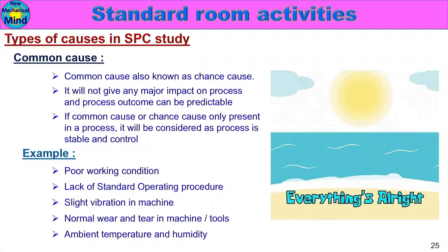If common cause is present, the process is stable and controlled. Common cause does not have one major impact, so all processes have one or another common cause.